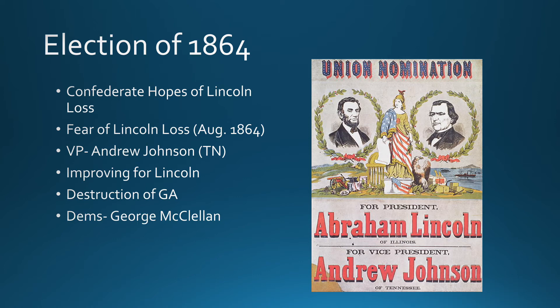The Democrats put up George McClellan — the same McClellan who was the original commander of the Union armies yet was a poor general — as their presidential candidate. Lincoln said that if he won, they would continue to fight toward unconditional surrender of the South. McClellan said if he won, he would go and negotiate a peace — a peace that would have allowed slavery to continue in the country. There's a lot at stake in the 1864 election.